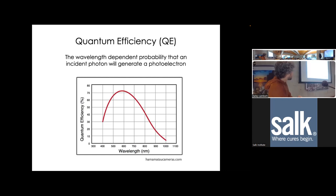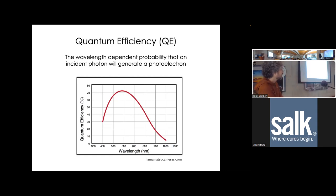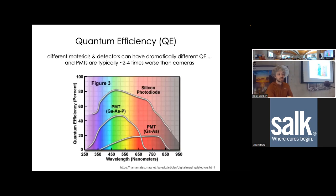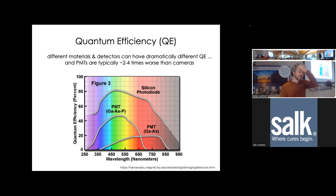It's very important to look at the quantum efficiency of your detector, particularly if you're imaging in the far red regime - make sure you're using a detector that is actually sensitive to that. Note that this does not mean the detector has color sensing capability. This is a monochromatic detector with some probability of detecting a photon that varies depending on wavelength, but it cannot discriminate between a 500 and a 600 nanometer photon.